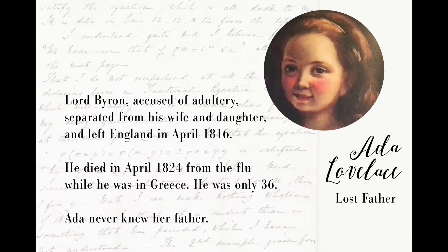Lord Byron was accused of adultery — it might have been incest with a half-sister — and he separated from his wife and daughter and left England in April of 1816. He died in April 1824 from the flu while he was in Greece, and he never returned. He was only 36, so Ada never knew her father.